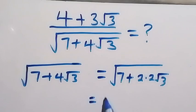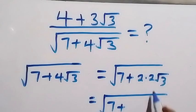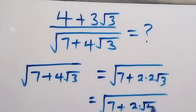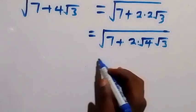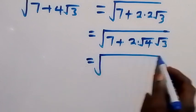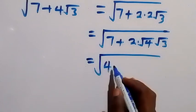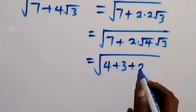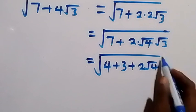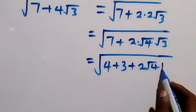We can also write this as square root of 7 plus 2 times root 4, since root 4 is 2, times root 3. Then let's separate 7 as 4 plus 3, so we have square root of 4 plus 3 plus 2 times root 4 multiplied by root 3.